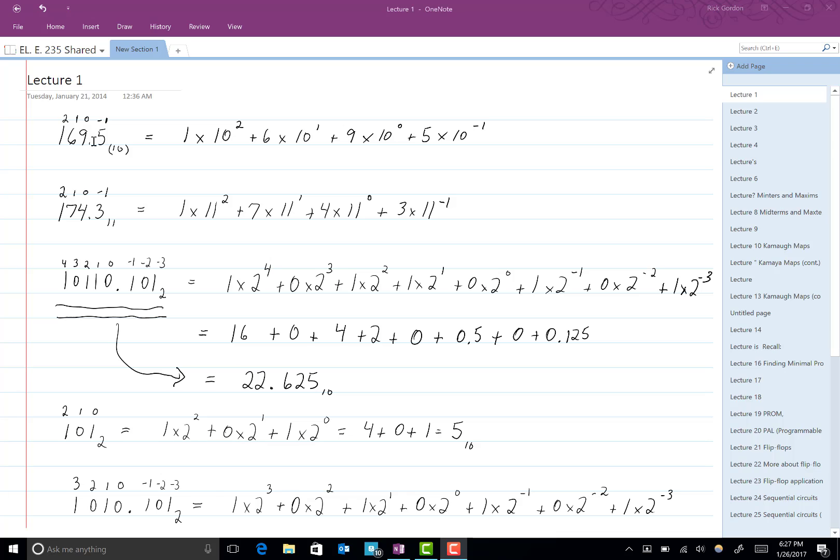169.5 base 10 equals 1, the first number that appears, times the base, which is 10, raised to the 2 power. So 1 times 10 raised to the 2 power, plus the second number, which is 6, times the base 10 raised to the 1 power. 6 times 10 to the 1 power.